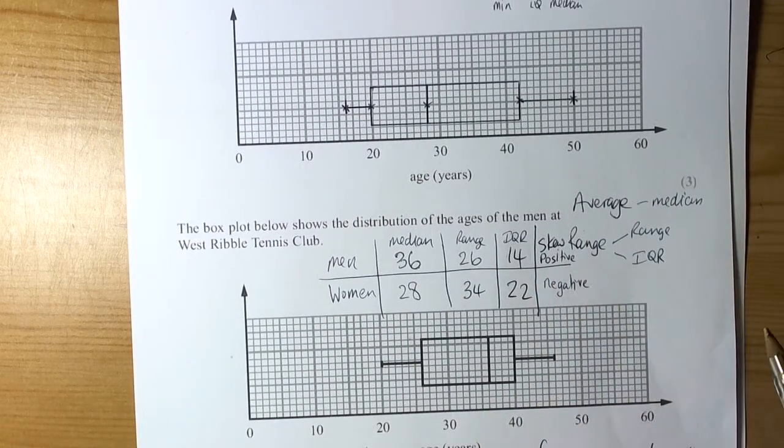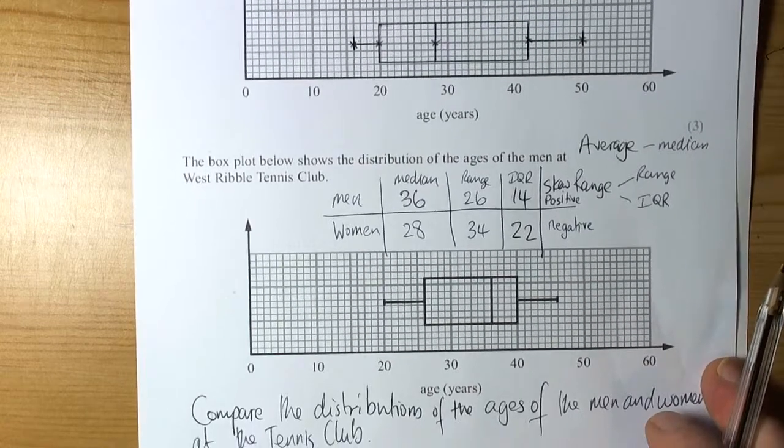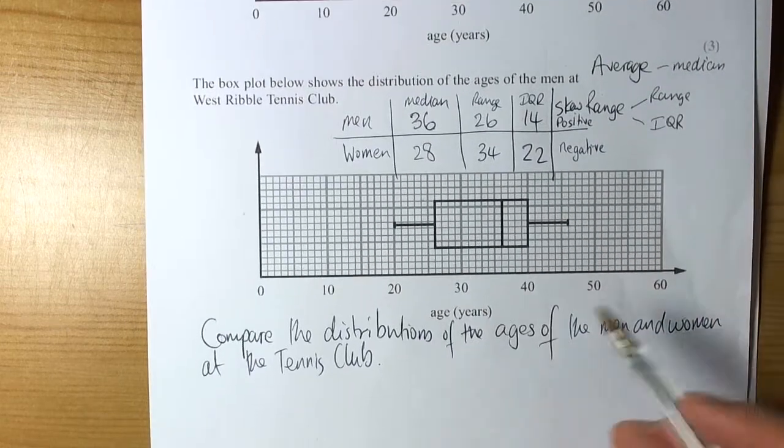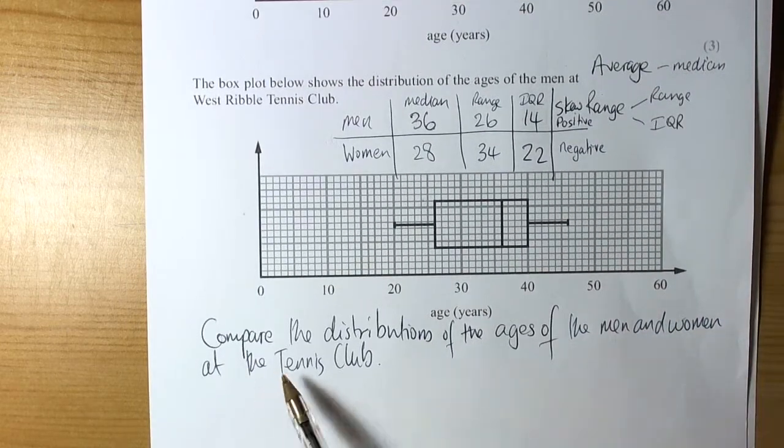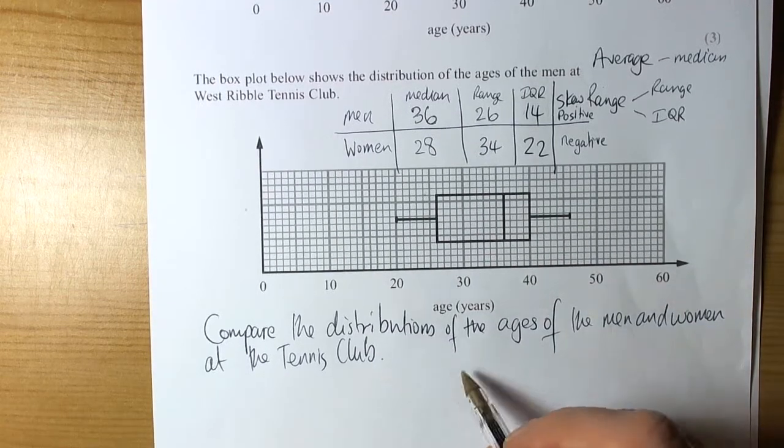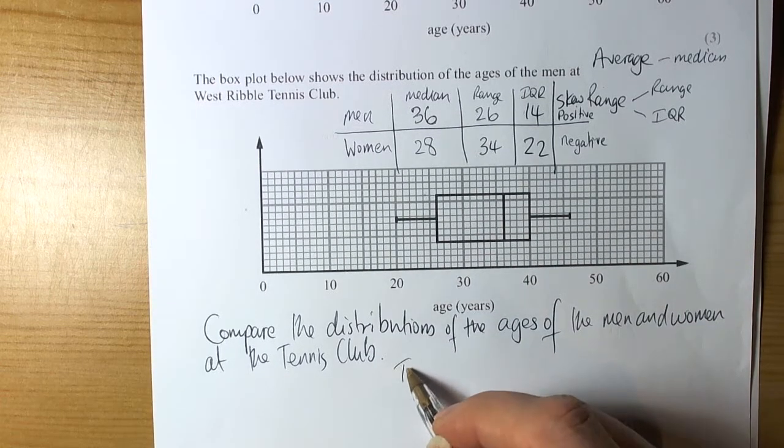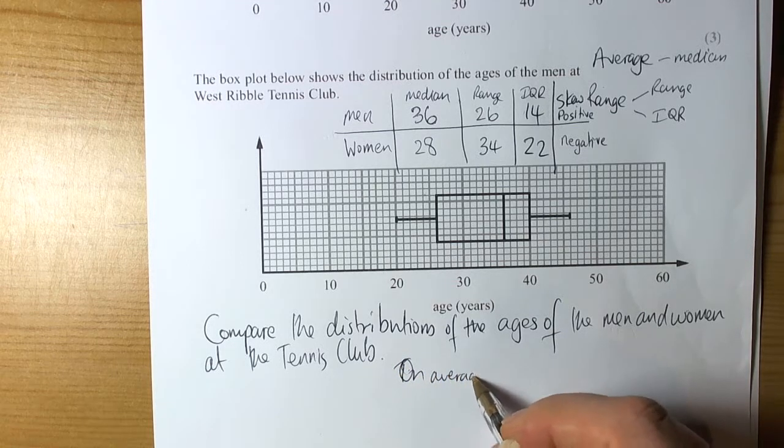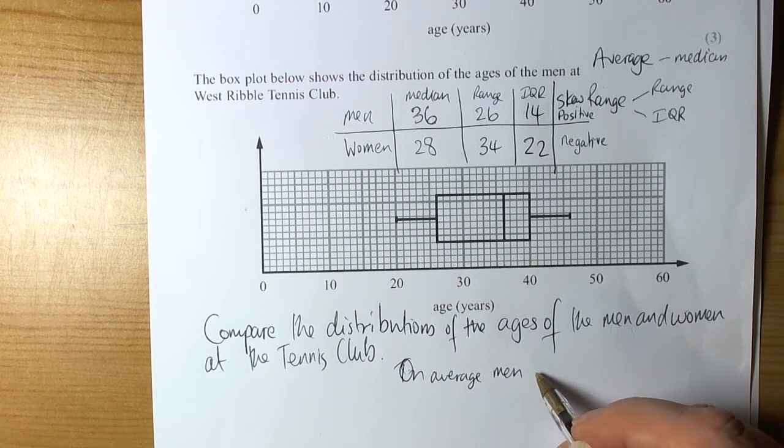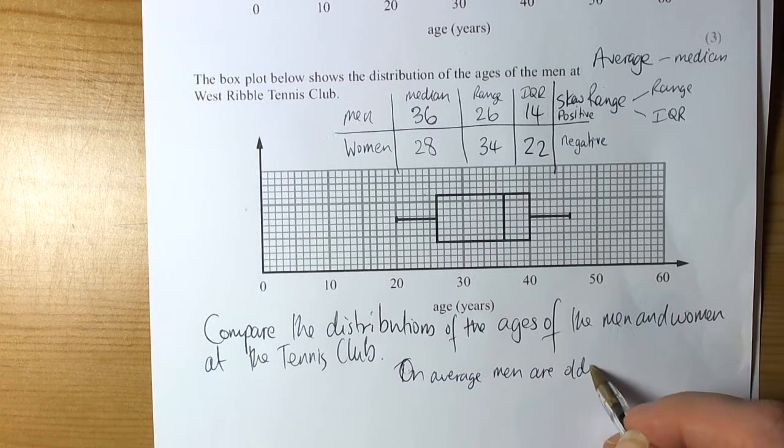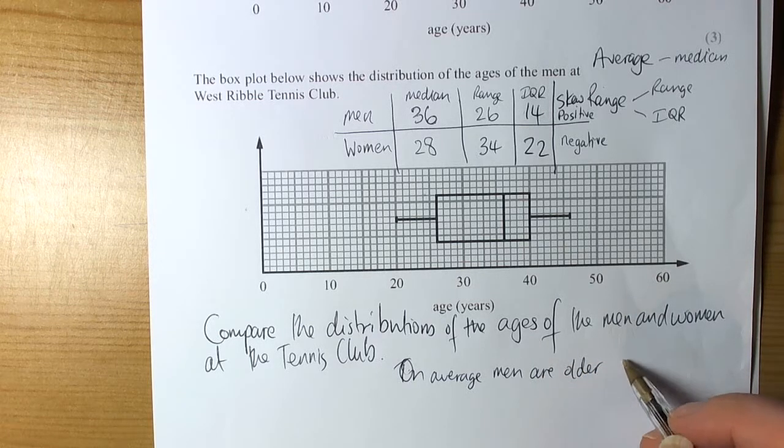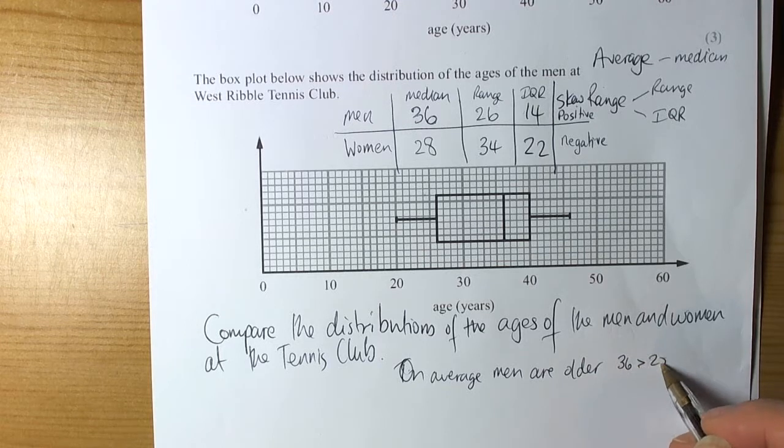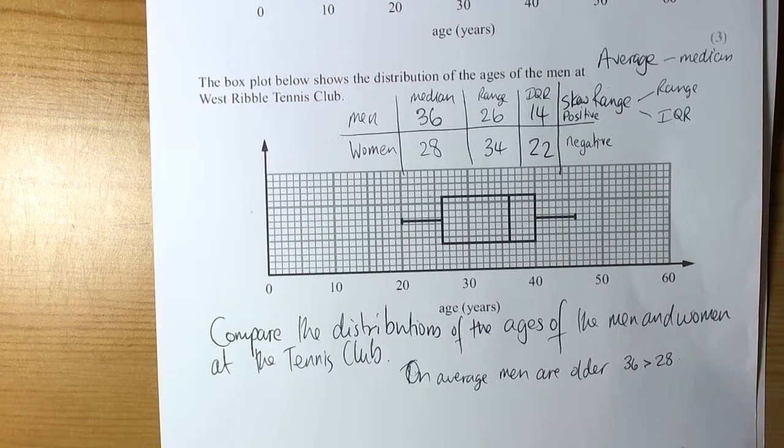So, it's not like calculations. So, that will give us our calculation marks for the distribution. But, obviously, we then have to talk about what the values mean. It's about a compare. So, we'd have to say things like, on average, the men are older, because their median average was 36. So, 36 is greater than 28. Always quote the value, it's quite useful.